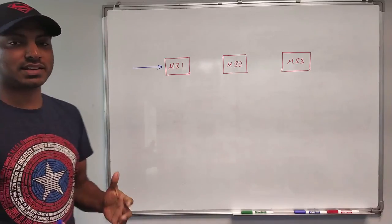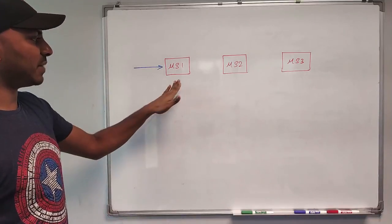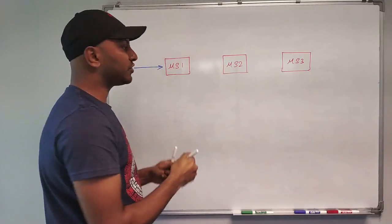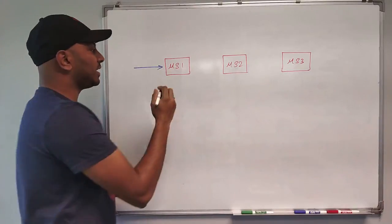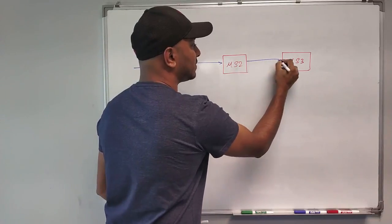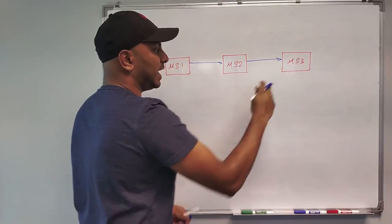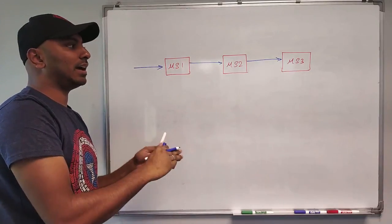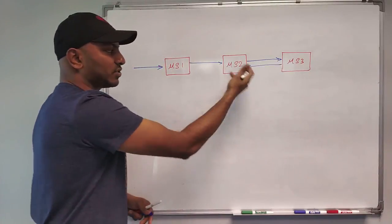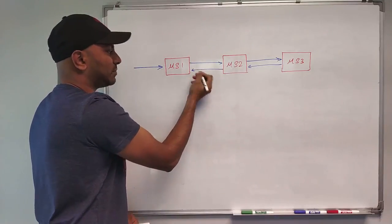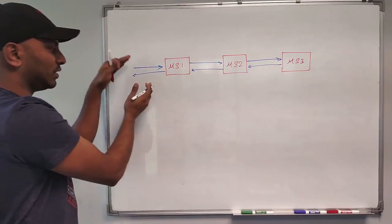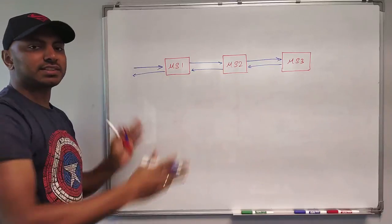Let's take an example and understand what exactly it is. Say for example, this is microservice one, microservice two, and microservice three. These three services are interacting with each other synchronously. When the request comes to microservice one, microservice one makes a call to microservice two, and in turn microservice two makes a call to microservice three. If every service is available and happy, we will definitely get the response from microservice three, and in turn microservice two will do whatever it's supposed to and sends back the response to microservice one, which gives the response back to whoever called it. So this is the happy path.